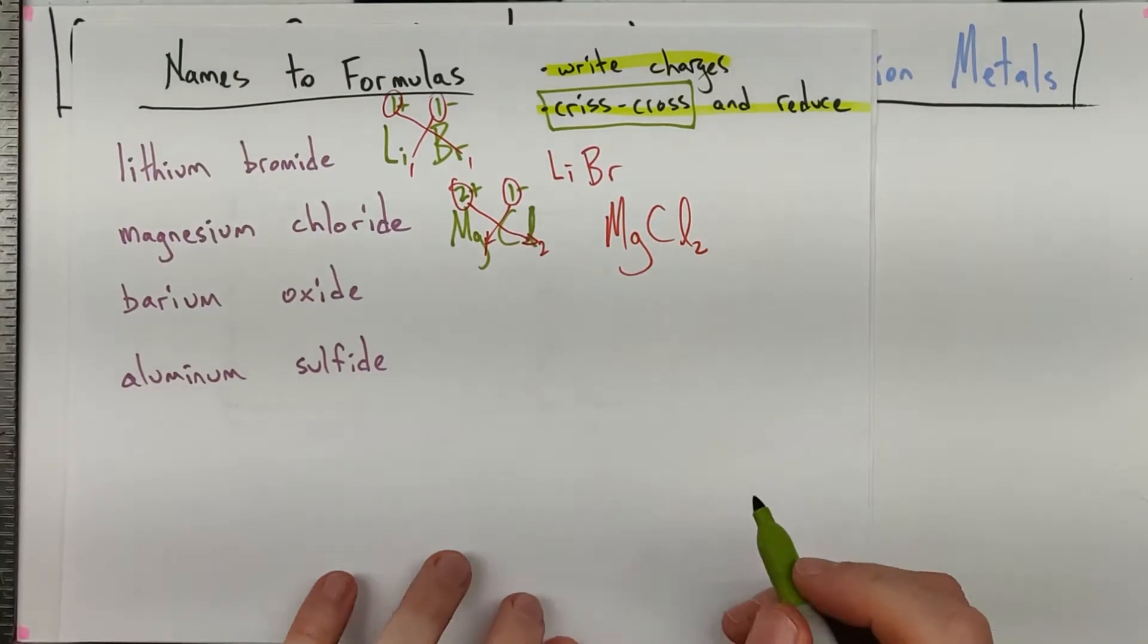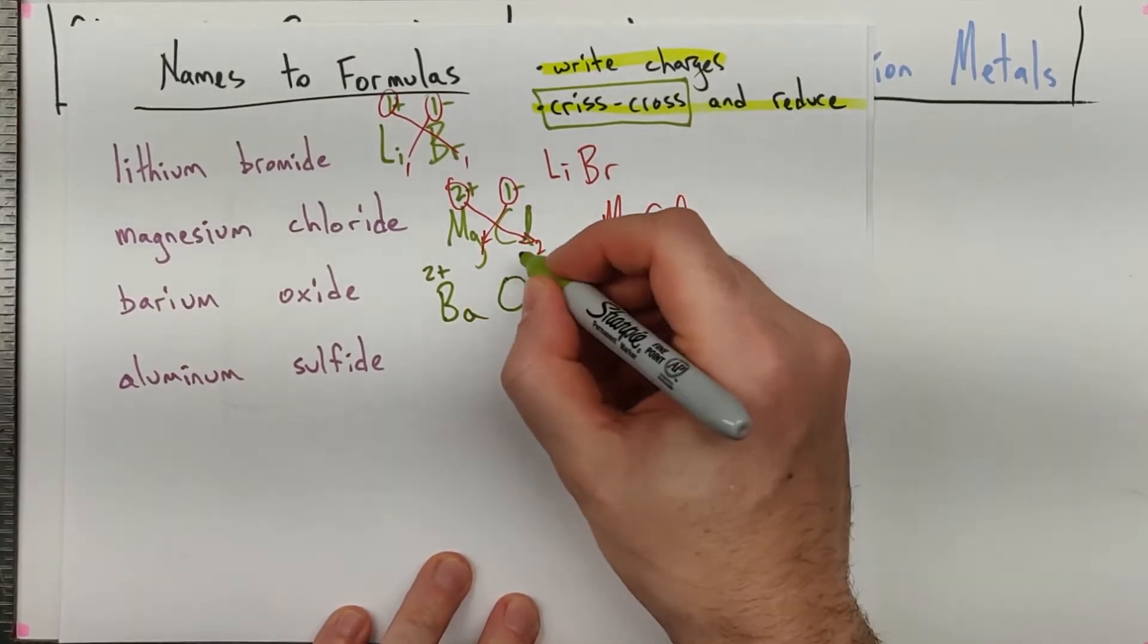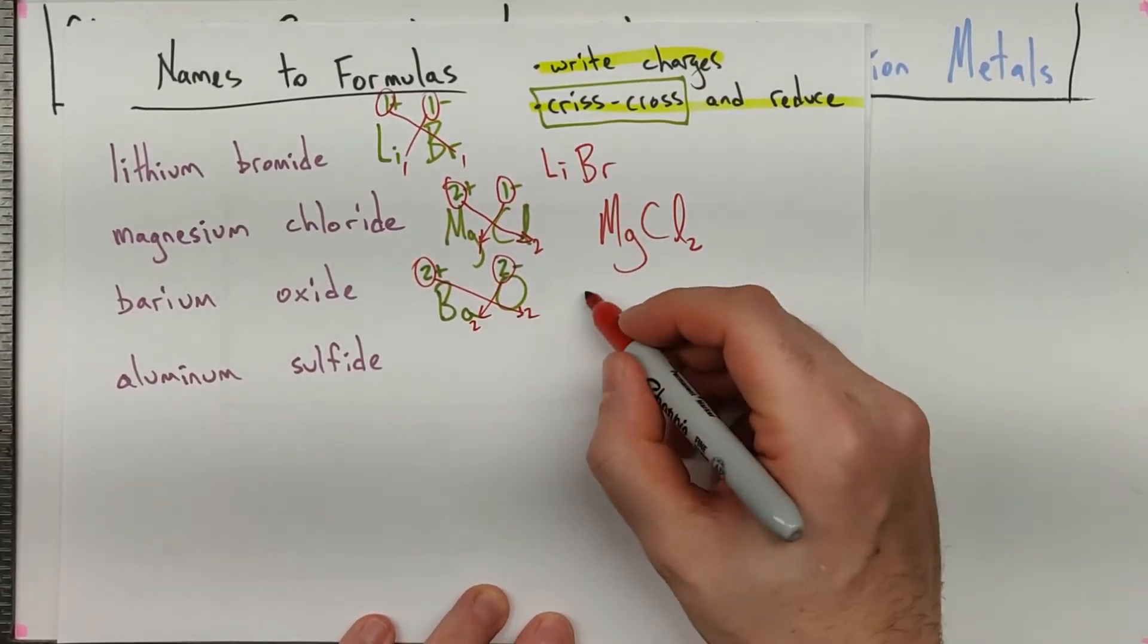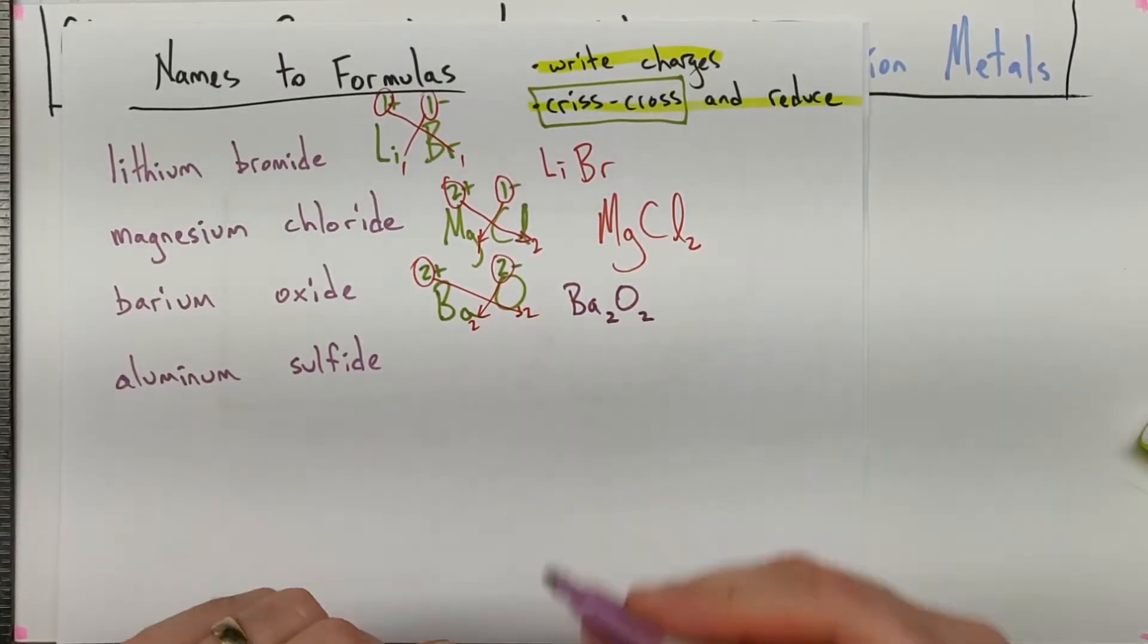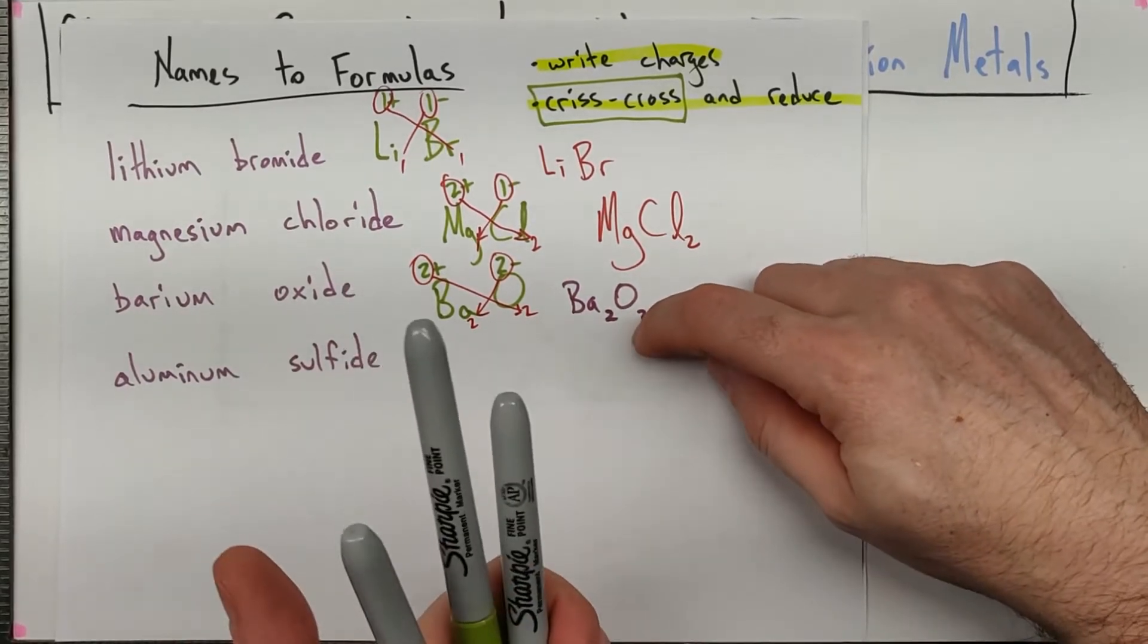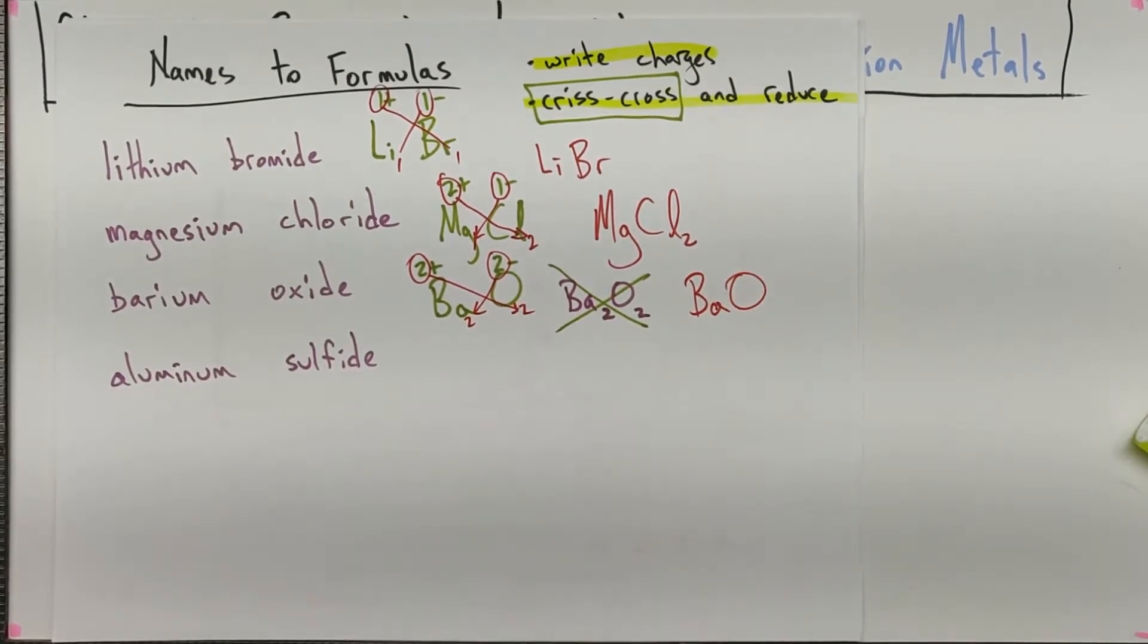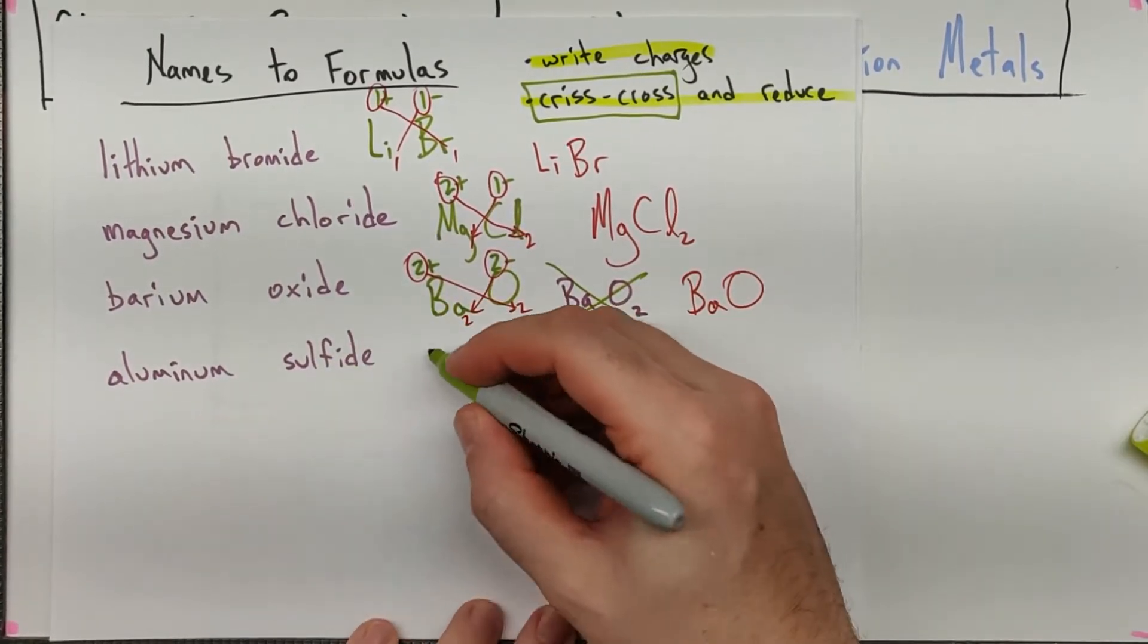Looking at the next one here, barium oxide. This is where that reducing comes into play. Barium, group 2 of the periodic table is a 2 plus. Oxide from oxygen, group 16 of the periodic table is a 2 minus. When we crisscross these, we'll put a 2 there and a 2 there. But that would give us Ba2O2. You may remember that ionic compounds always use the empirical formula. And that's the lowest whole number ratio of things. When you end up with a situation like this, you need to then reduce it one step more to lowest whole number ratios. In this case, that would be BaO.